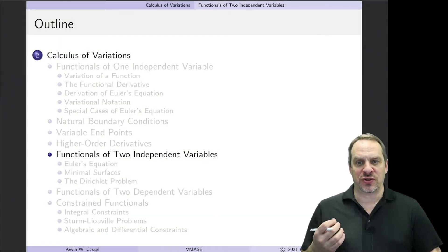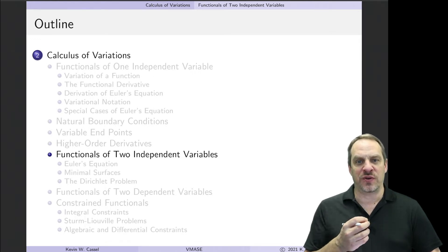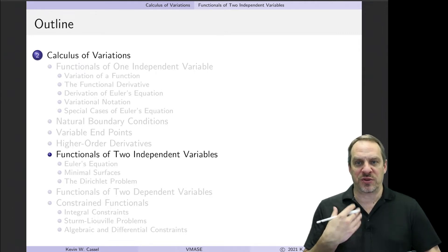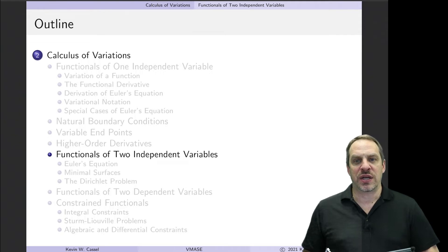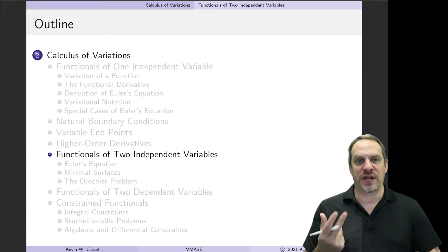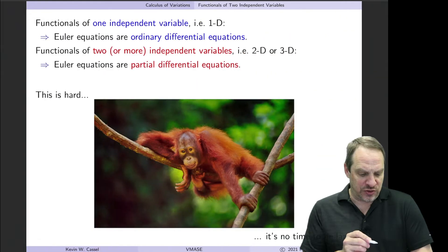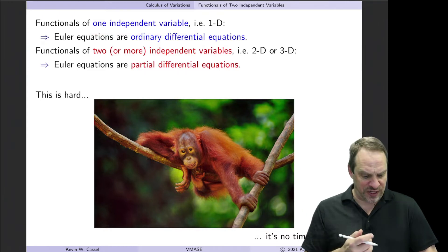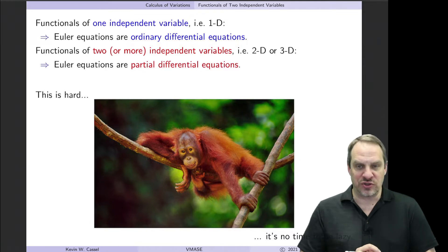We've been looking at a series of extensions to our baseline case where we have a functional with an integrand capital F that involves x, u, and u prime, and we've extended to higher order derivatives. We've looked at different types of boundary conditions such as natural boundary conditions, and now we want to look at the case where we have multiple independent variables. In the case where we have one independent variable, it's a one-dimensional problem — u is just a function of x — and so our Euler equations end up being ordinary differential equations.